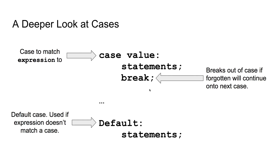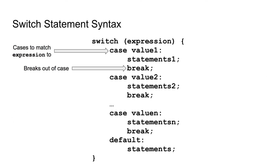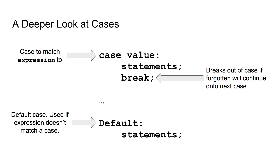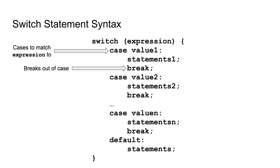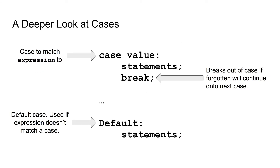Let's take a deeper look at case statements. We have this case value, which is the value to match the expression to. So the expression could be the number one, and then you could have case one. That expression would select this case based off of that value — these values are what you want the expression to trigger. Then you have your statements and a break at the end, which acts like your closing curly brace. The colon is like your opening curly brace, and that break breaks out of the case. If it is forgotten, it will continue on to the next case, and we will see that in the programming example.